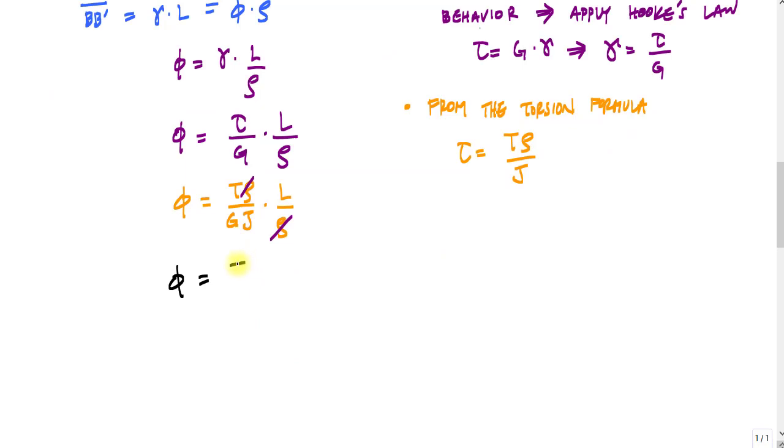My formula for the angle of twist, when I have a constant cross section, a constant internal torque, and uniform material properties is this: phi equals TL over GJ. And what I've done here is relate the angle of twist directly to the internal torque. Another thing you might want to be aware of is that GJ here, G is the shear modulus of elasticity, J is the polar moment of inertia, and together they make what's called torsional rigidity or torsional stiffness.